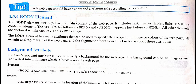The body element begins with the body tag. It is the main content of the web page — the page that you view on the web browser. It includes text, images, tables, and links, which we shall study further. It is a container element that has both an opening tag, body, and a closing tag, backslash body. It appears just before backslash HTML. Within the HTML element's tags, the body tag is included.